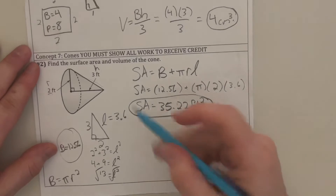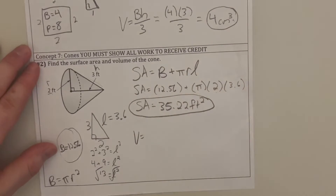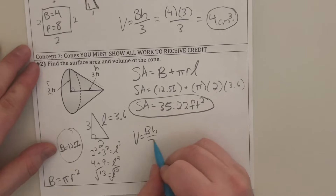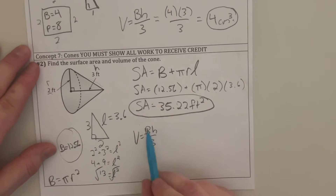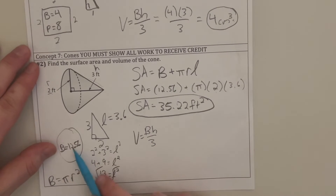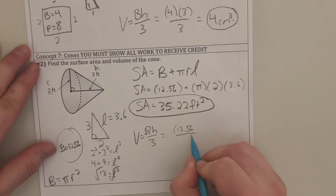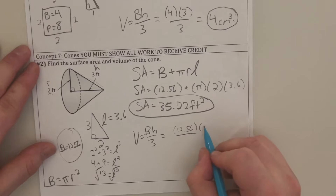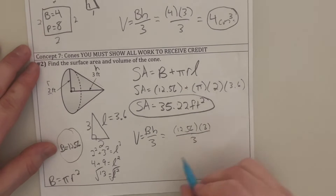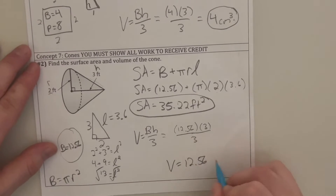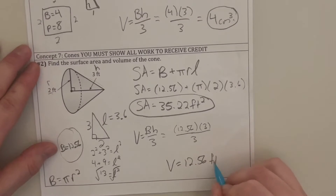Volume is super simple because it's the same formula as a pyramid. Since our area of the base is a different figure, make sure you're finding that first. So I have about 12.56 times the height of 3, divided by 3. This is going to be volume equals 12.56 feet cubed.